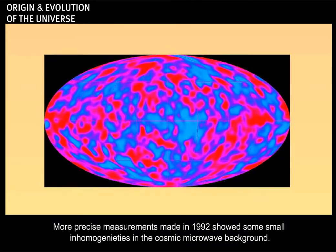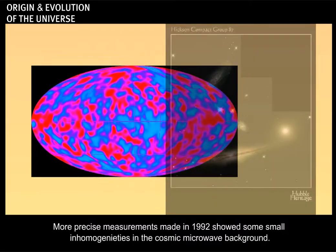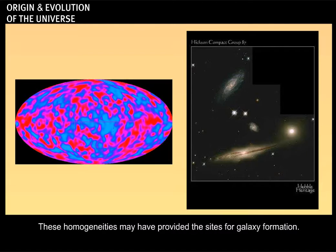More precise measurements, made in 1992, showed some small inhomogeneities in the cosmic microwave background. These inhomogeneities may have provided the sites for galaxy formation.